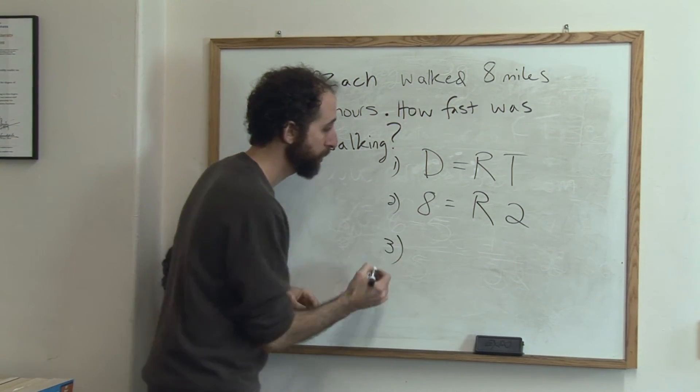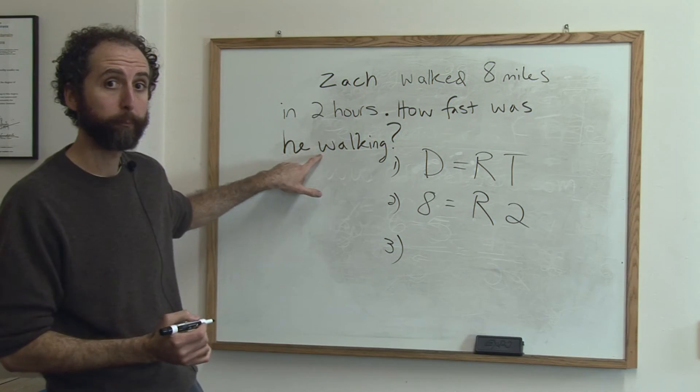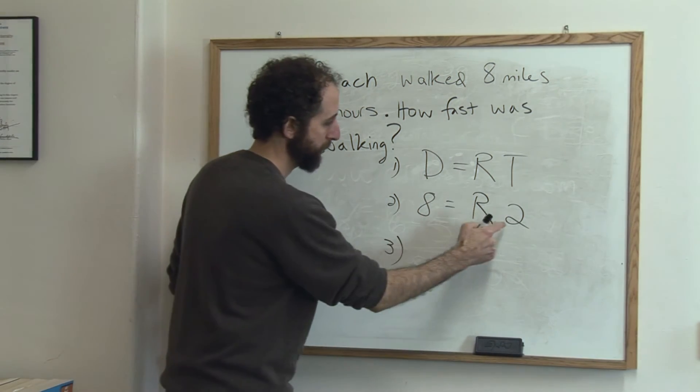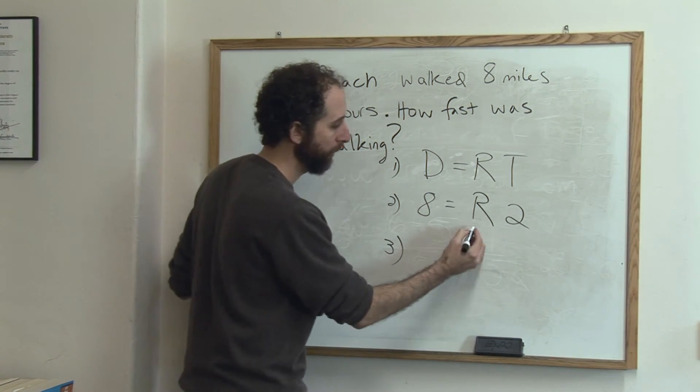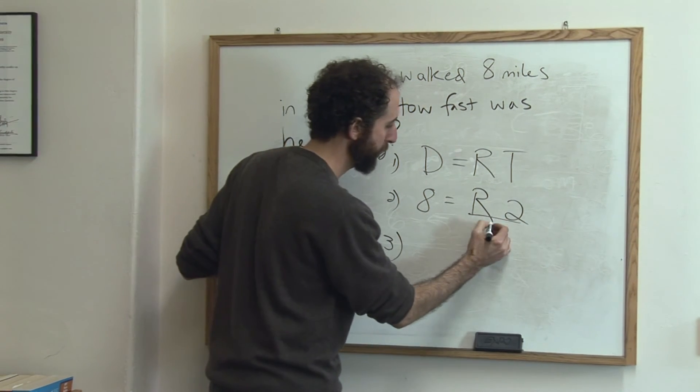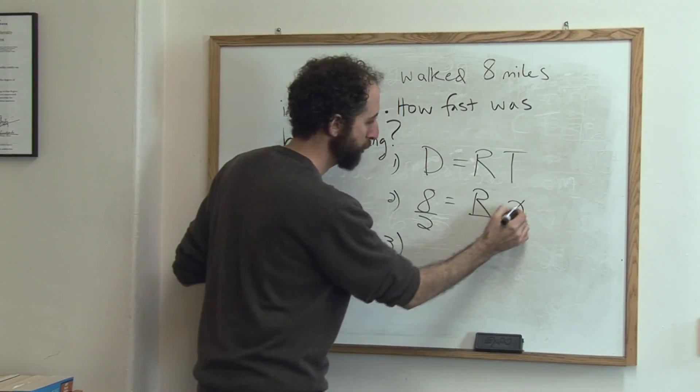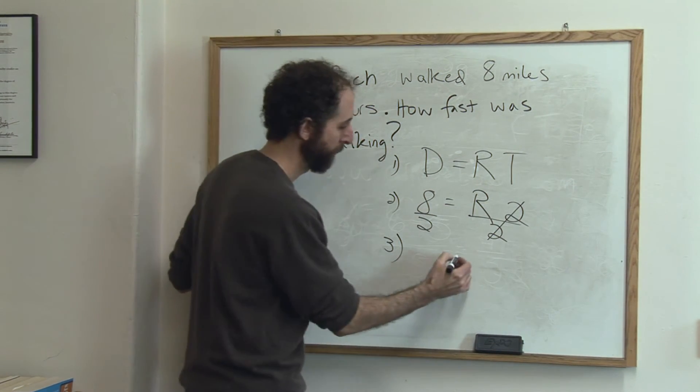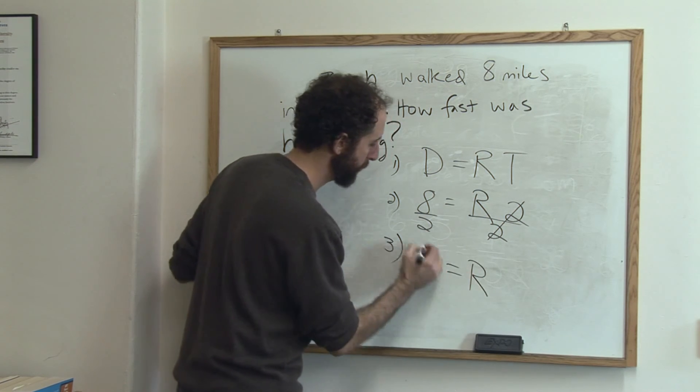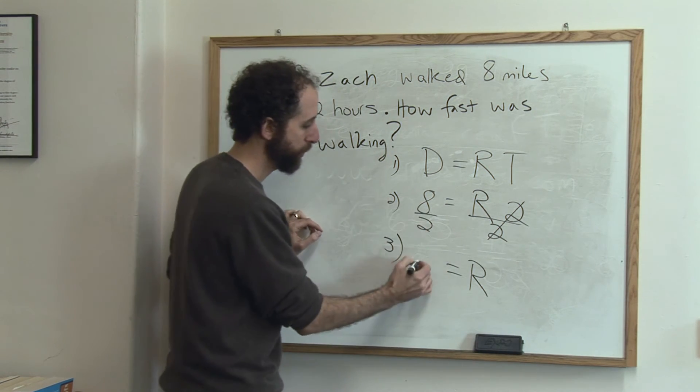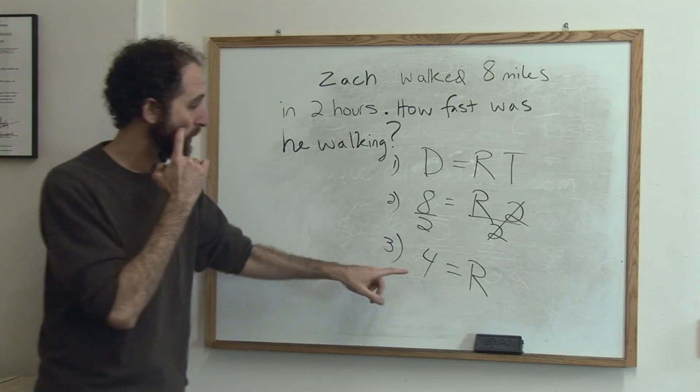Step three, solve for what you don't know. And that's usually going to be the thing they wanted. So we want to solve for R. So we're going to divide by two. Two over two cancels. That's why we did it. R alone equals eight over two. Eight over two is four. So his speed was four.